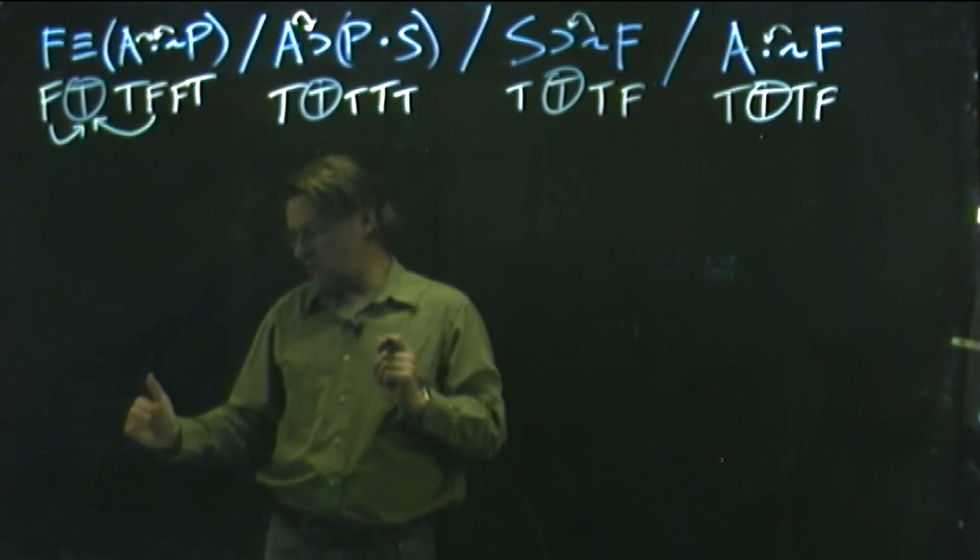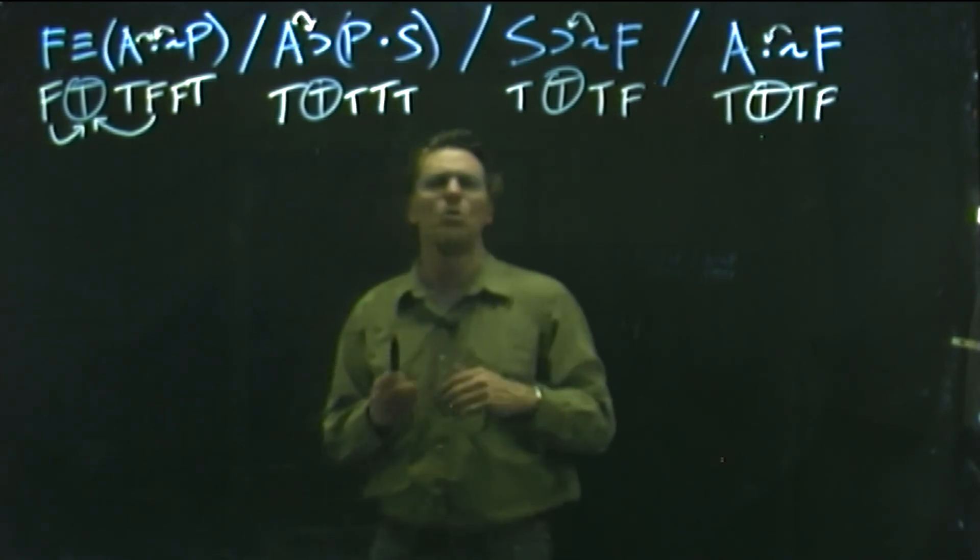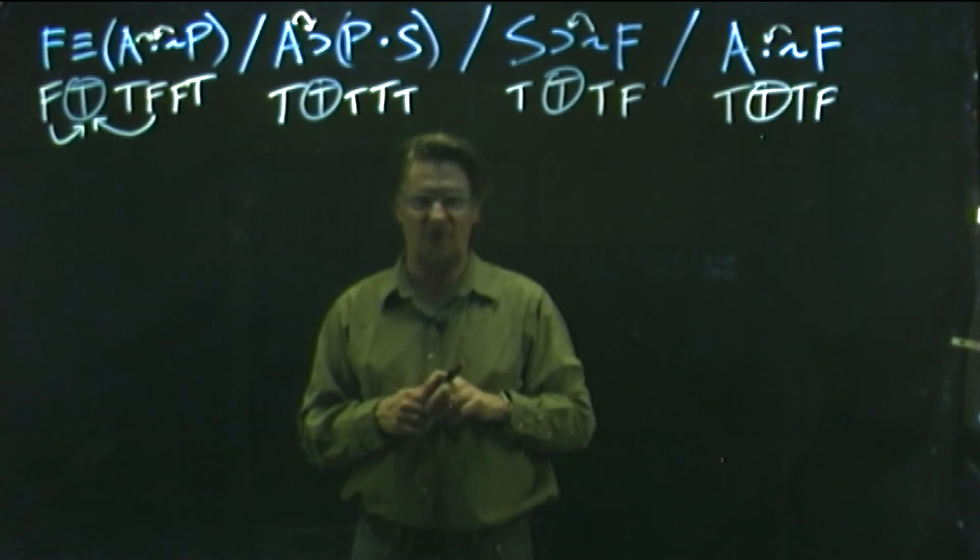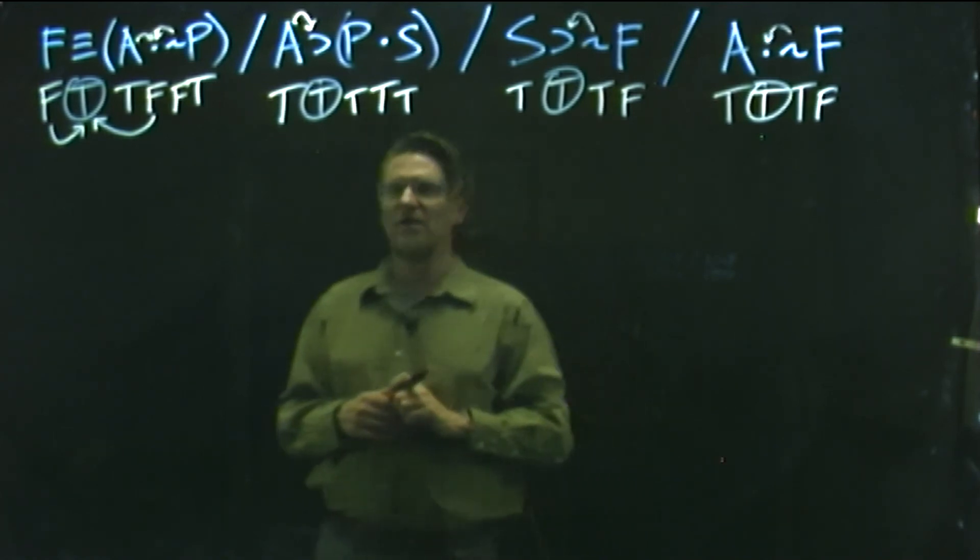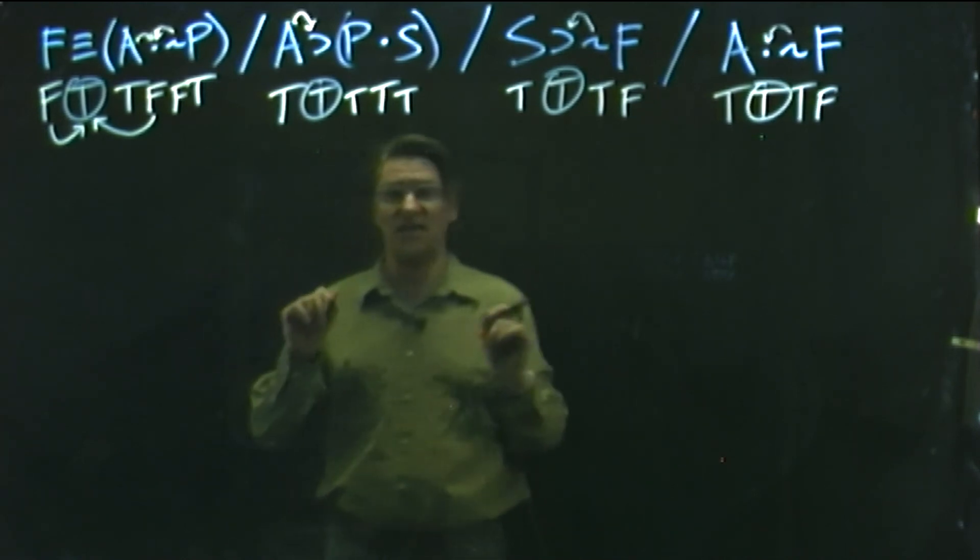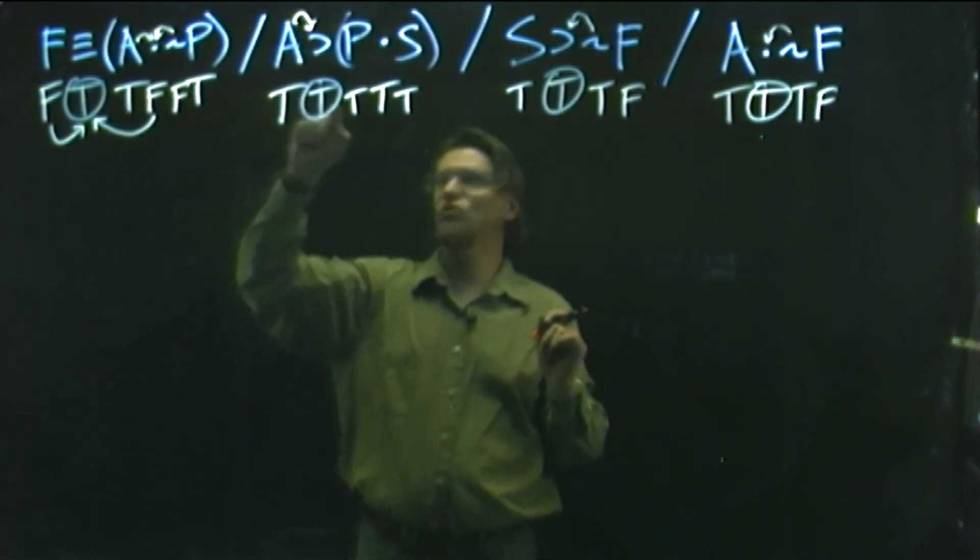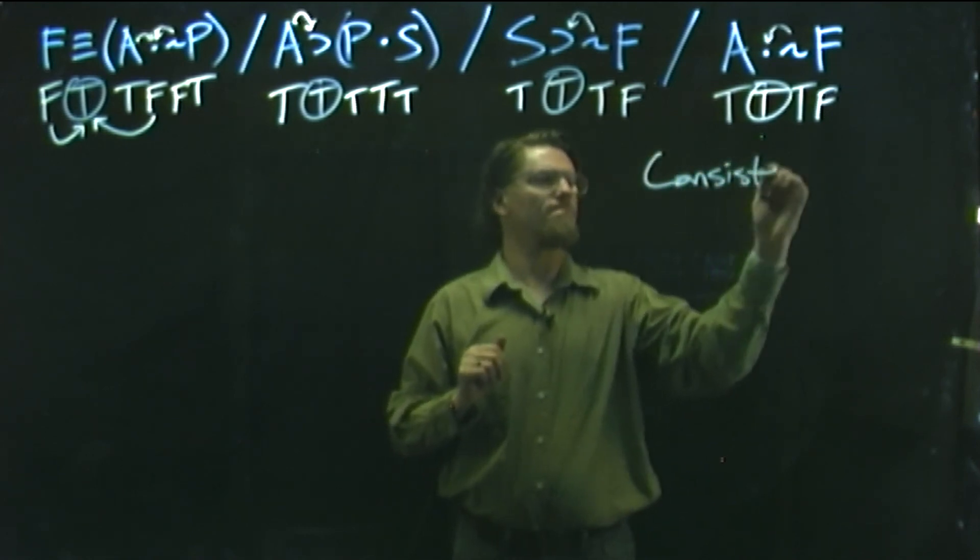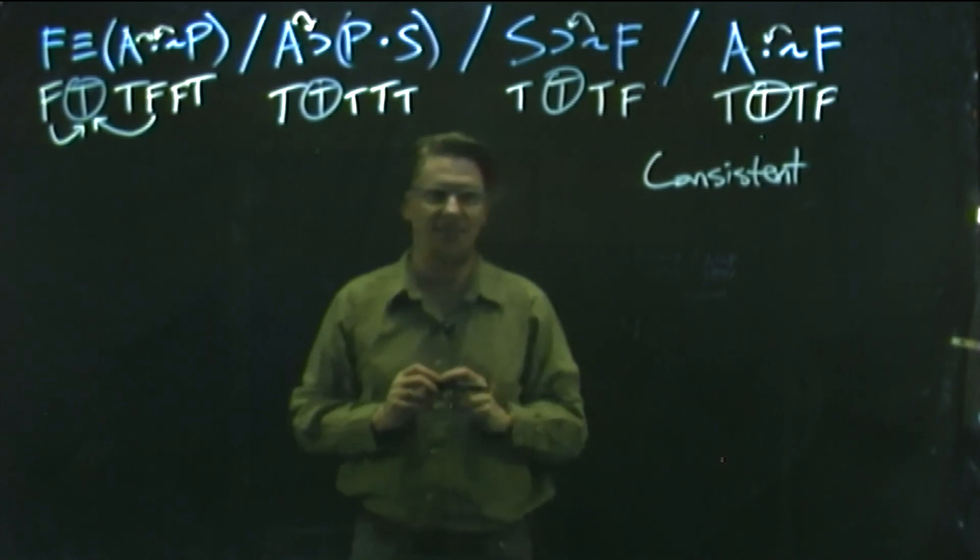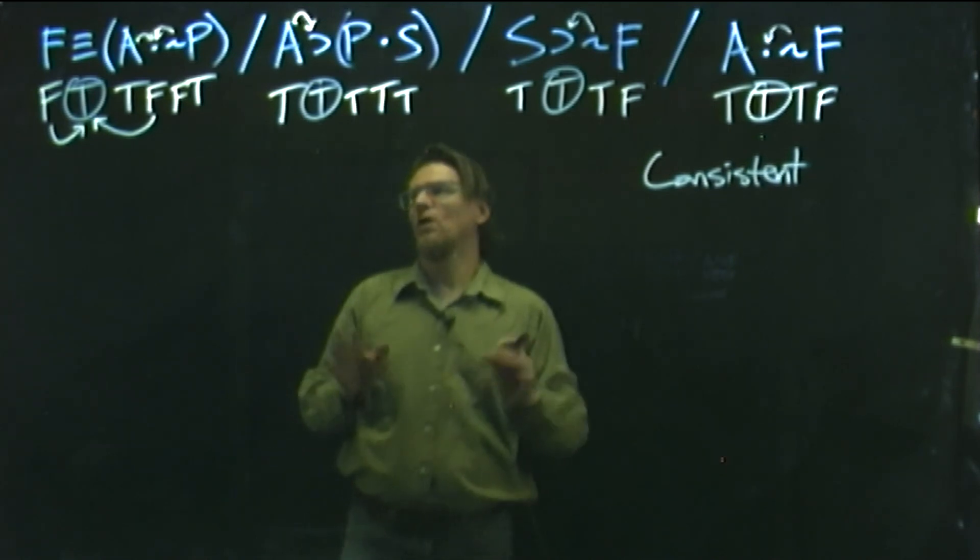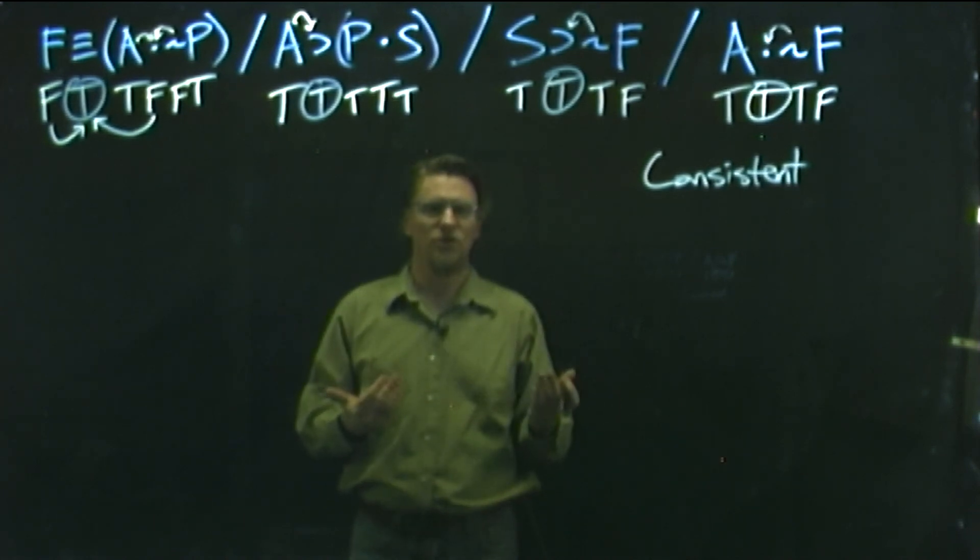And so we can then go down to step six because step five is about what happens when there's more than one way to make the first claim you worked on true. There was just the one way to make this true so we can skip step five. So we get down to step six. If you are finally unable to get all the claims to be true, the claims are inconsistent. But if at any point in working on the problem you're able to get all true claims at the same time, as we just showed, these claims are consistent. They are consistent, they could all be true at the same time, in other words.